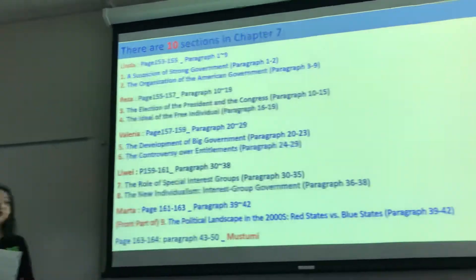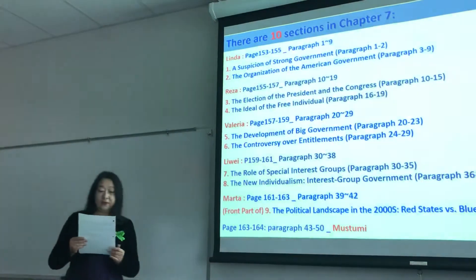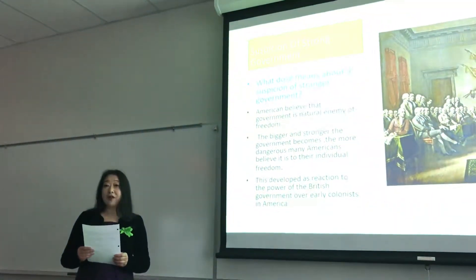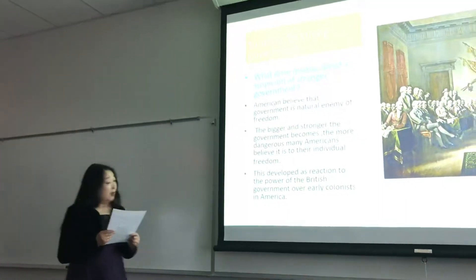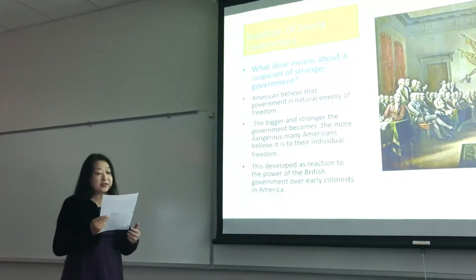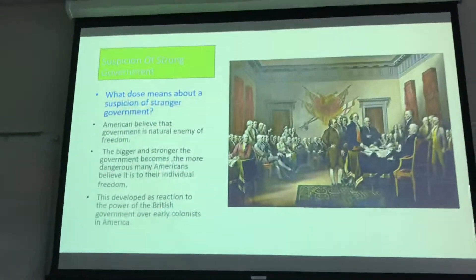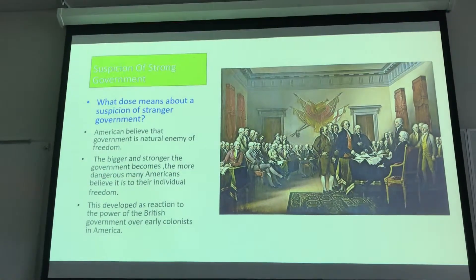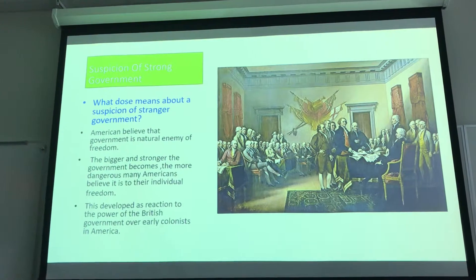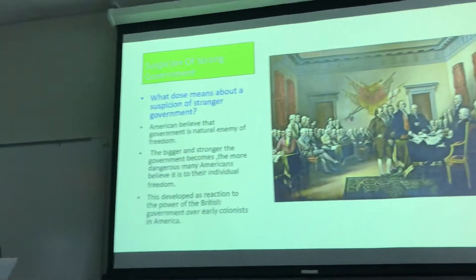I'll introduce it to you. Chapter 7 is about the suspicion of the strong government. What role do Americans think their government should play in their lives? How do American values affect how the United States government functions?